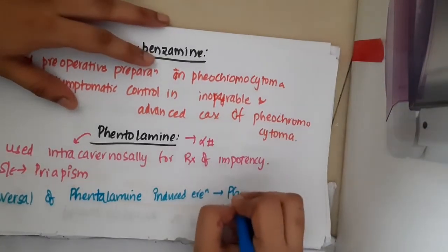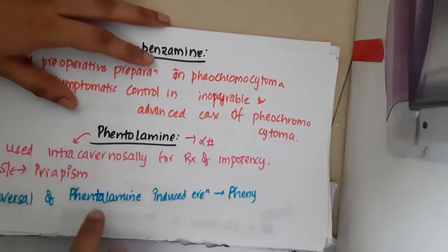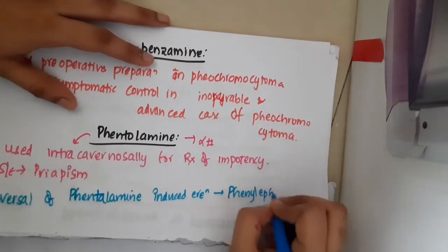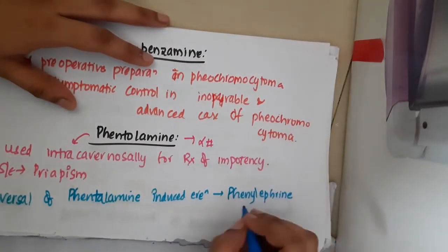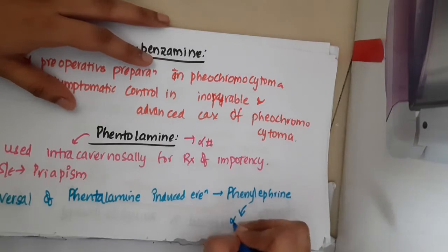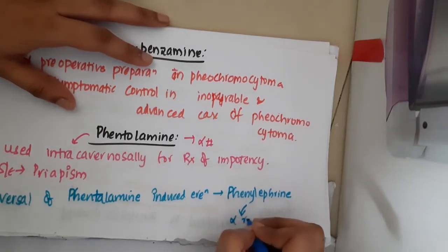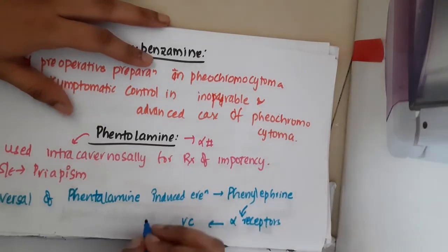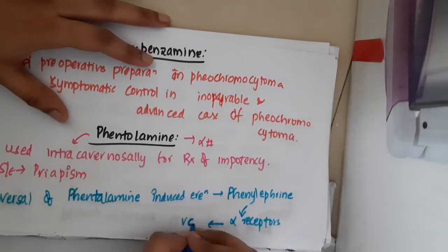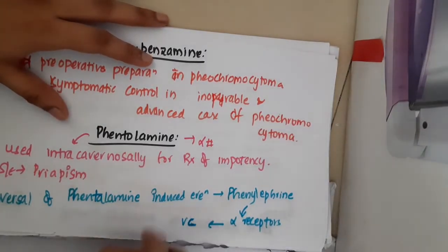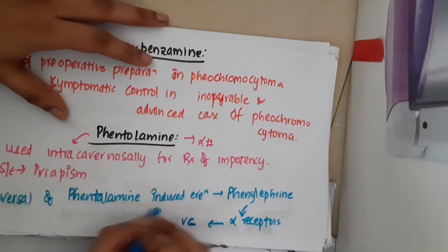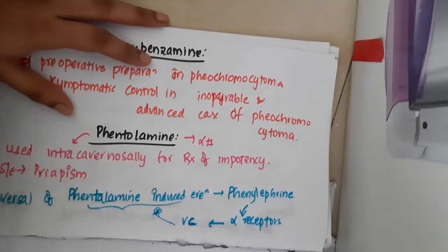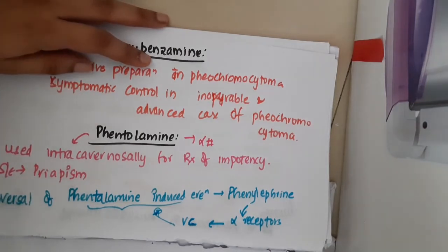Phentolamine-induced erection is reversed by Phenylephrine. Phenylephrine acts on alpha receptors and produces vasoconstriction, and thus inhibits the erection — sorry, Priapism. This is about Phentolamine.